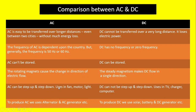AC can be stepped up and stepped down — it is used in fans, motors, and lights. DC cannot be stepped up and stepped down — it is used in TVs and computers. To produce AC we use an alternator and AC generator. To produce DC we use solar panels, batteries, and a DC generator.